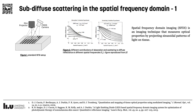By performing measurements at multiple spatial frequencies and utilizing a model of light transport, it is possible to separate the effects of the two optical properties, and obtain a 2D map of absorption and scattering.